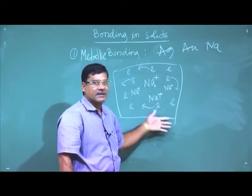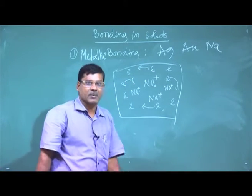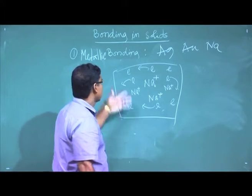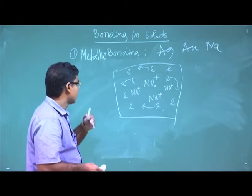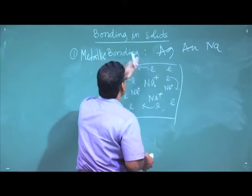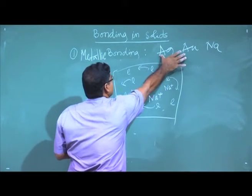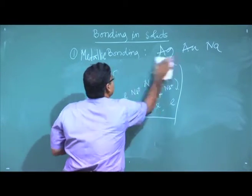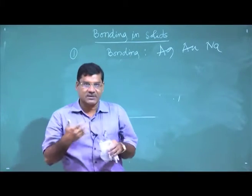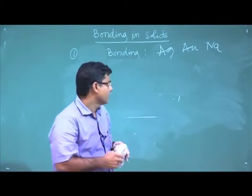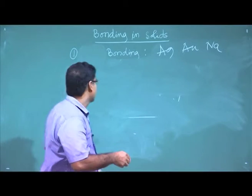For metallic bonding we also speak of a free electron gas. This gives metallic materials their electrical and conductive properties, which we will discuss when we study electrical properties of materials. Ionic, covalent, and metallic bonding are called primary bonding, since they are responsible for most solids.